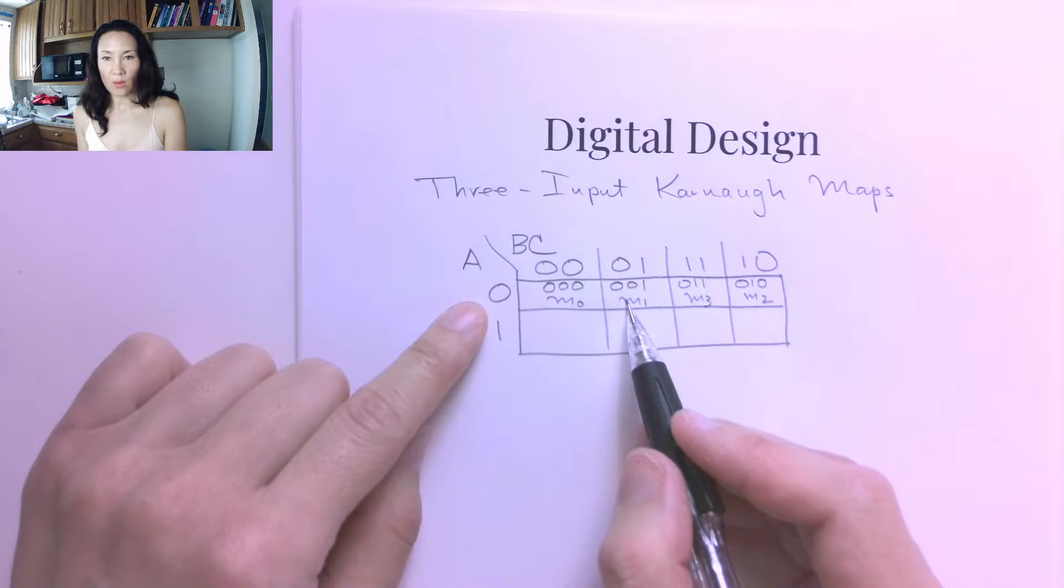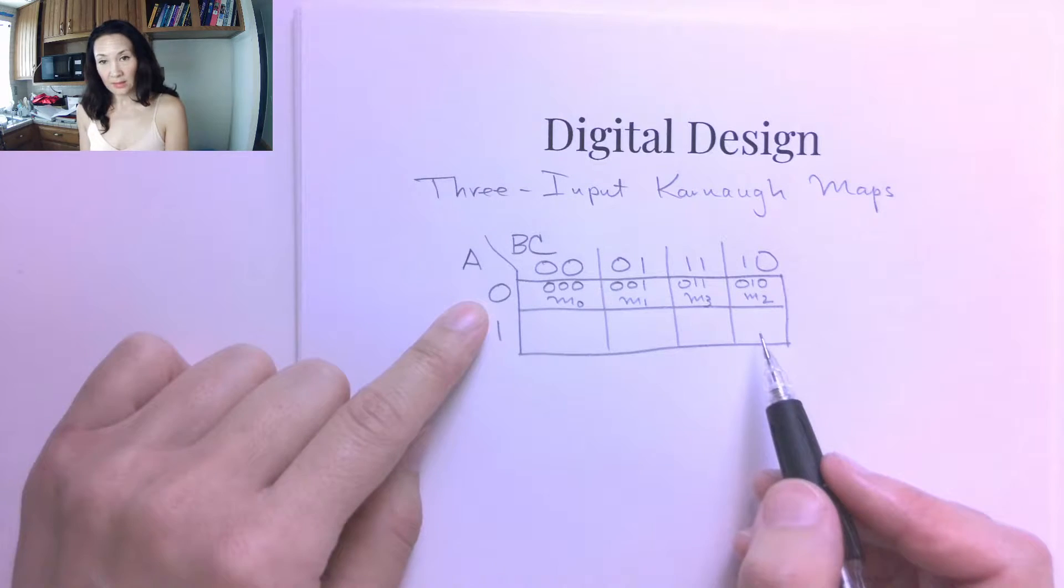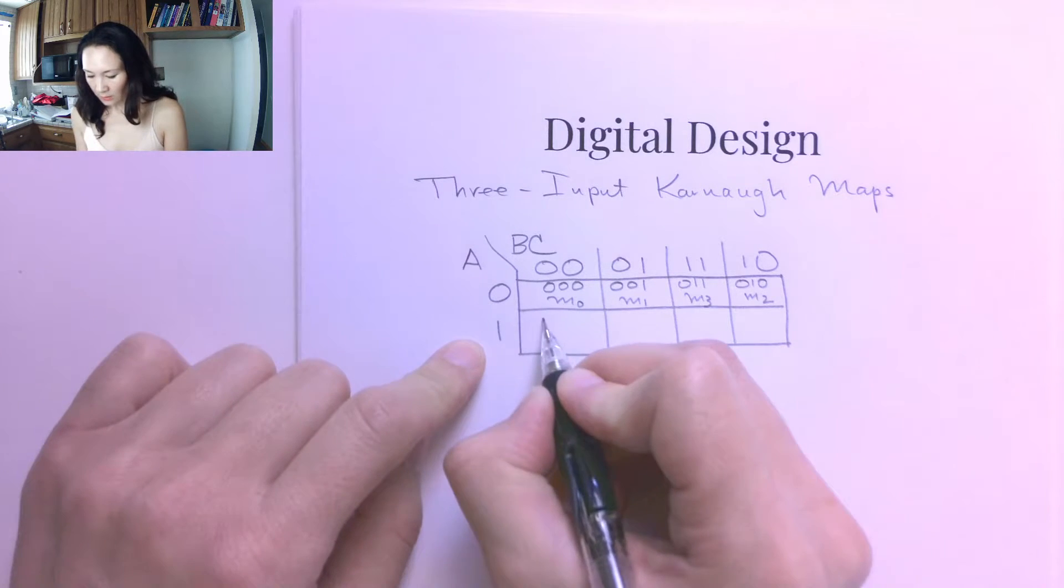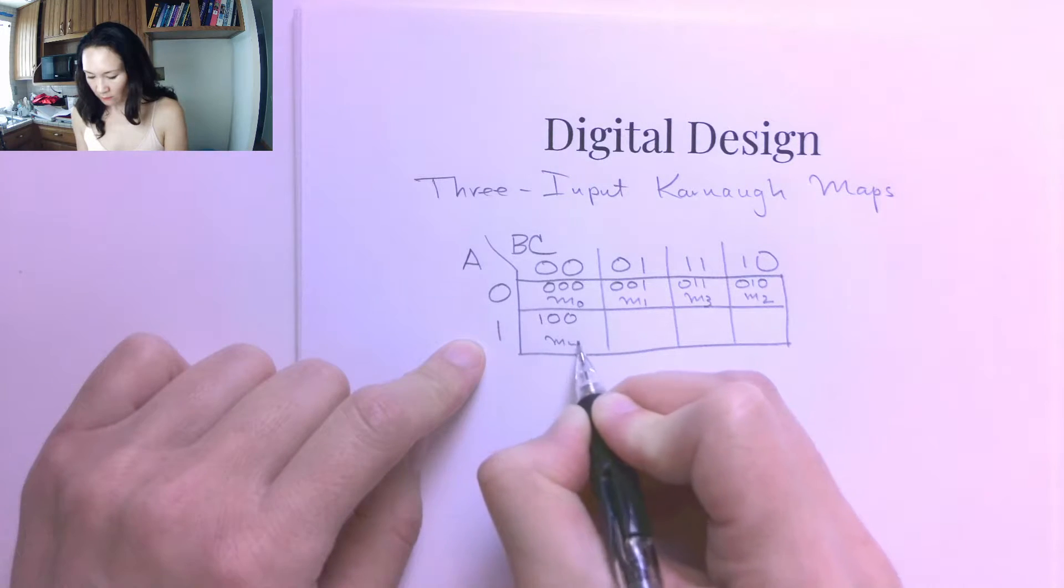The ordering goes 0, 1, skip over 2, back to 3. And the same thing is going to happen in this row. So this is when A is 1 and B and C are 0. So this is min term 4.